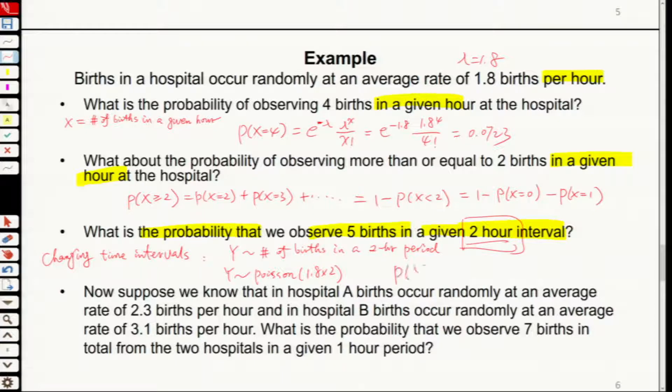So probability Y equals 5 equals exponential minus 3.6, this is 1.8 times 2. So 3.6 to the power 5 divided by 5 factorial. This will be the new one.